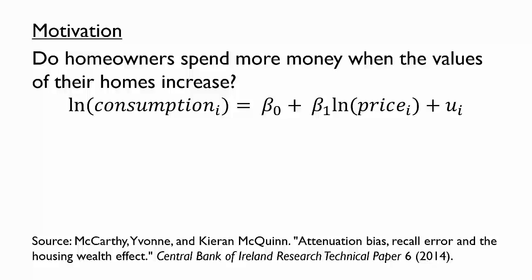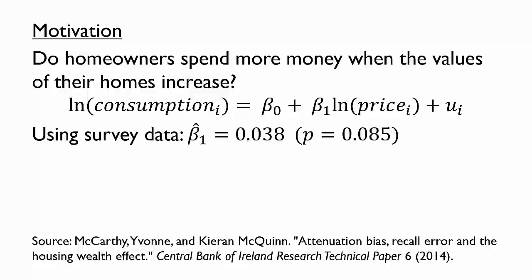When using survey data for house prices, they estimate beta 1 to be 0.038. This suggests that a 1% increase in house price is associated with a 0.038% increase in consumption. This sounds like a fairly small wealth effect, and in fact the p-value associated with the coefficient estimate is 0.085, so at the 5% significance level we would fail to reject that there is no wealth effect at all.